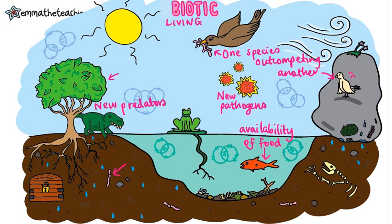Notice that three of these biotic factors are the same as three of the five reasons for species extinction. Can you remember the other two? I recommend making a mnemonic to learn all of the biotic and abiotic factors that affect communities — this is a really good way to help you revise.